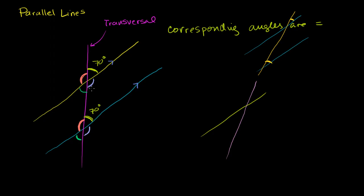The next set of equal angles are sometimes called vertical angles, sometimes called opposite angles. If you take an angle and look directly across the point of intersection, the angle opposite to it is equal. I prefer the term 'opposite' because it's not always in the vertical direction. Opposite or vertical angles are also equal.